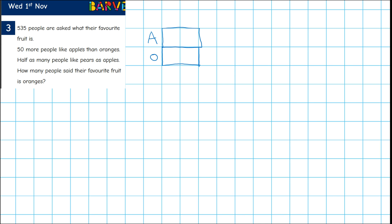But what we're told is 50 more people like apples than oranges. So I'm going to draw an extra section here. And I don't know how big it is in relation to this, and this has a value of 50.